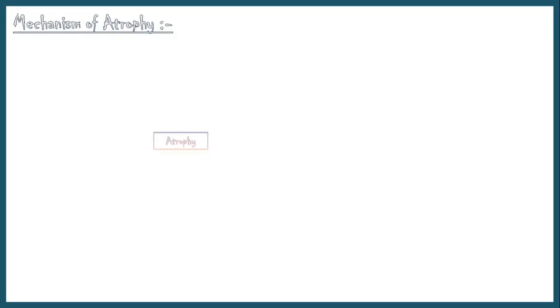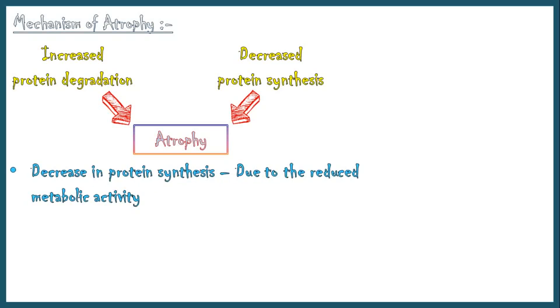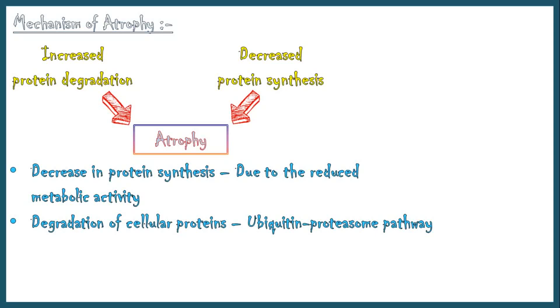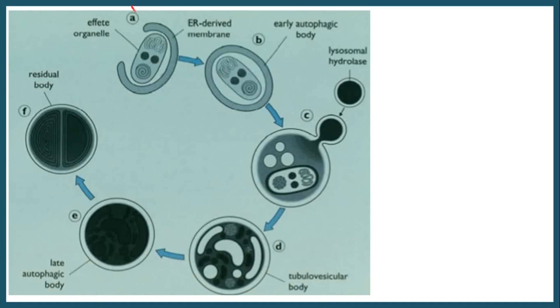The mechanism of atrophy results from increased protein degradation and decreased protein synthesis in cells. Protein synthesis decreases because of reduced metabolic activity. The degradation of cellular proteins occurs by the ubiquitin proteasome pathway. In addition, increased autophagy may also contribute to degrade intracellular proteins. Autophagy is a condition where starved cells eat their own components in order to survive. This image shows the steps in autophagy. In step A, the organelle which undergoes autophagy is bound by a membrane derived from the endoplasmic reticulum, forming an early autophagic body.